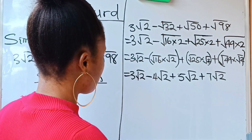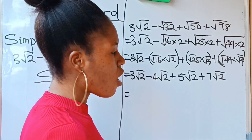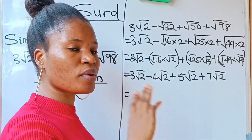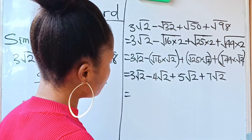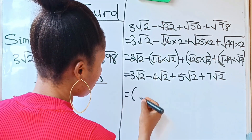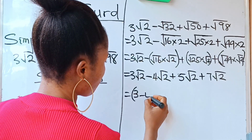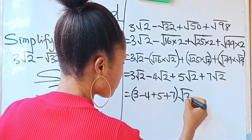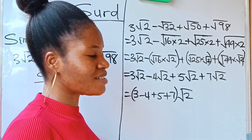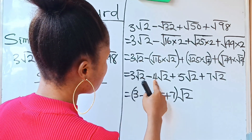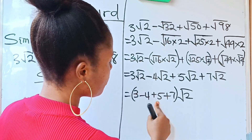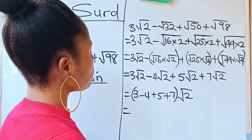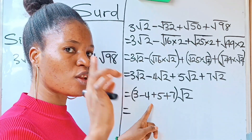To solve similar surds, you collect their coefficients and write root 2 at the end. So we write the bracket: 3 minus 4 plus 5 plus 7, all multiplied by root 2. That gives us (3 minus 4 plus 5 plus 7)√2.